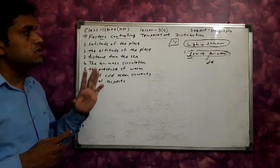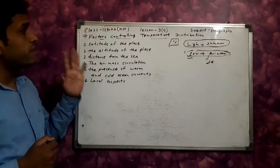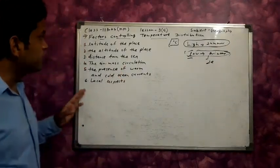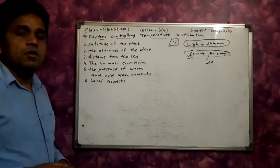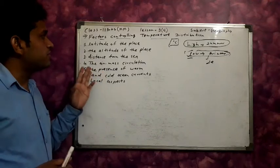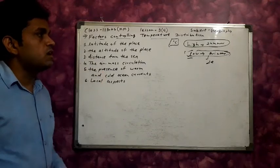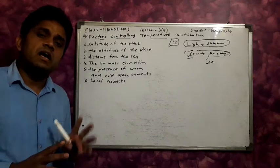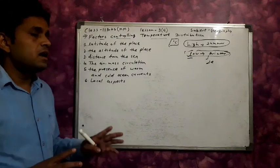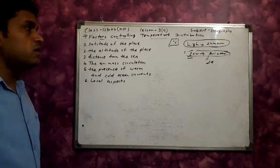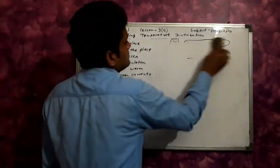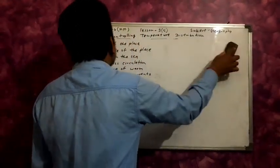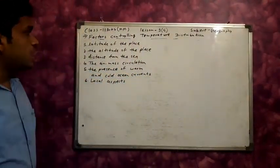The factors controlling temperature distribution are as follows. Temperature distribution is found uneven on the earth's surface. The first factor is the latitude of the place.